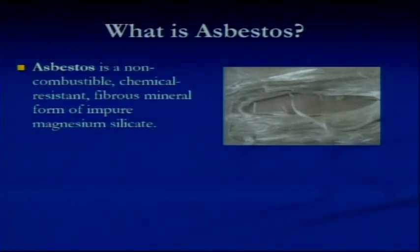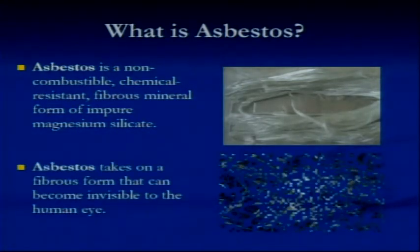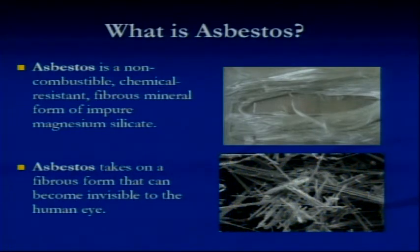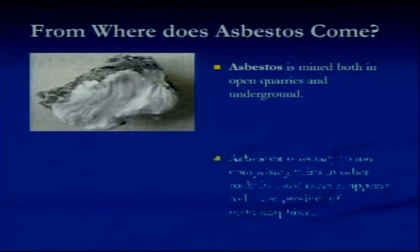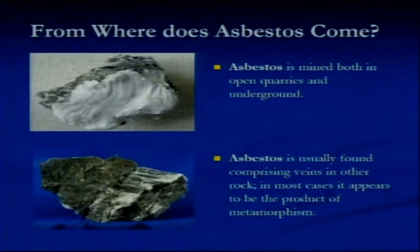Asbestos is a non-combustible, chemical-resistant, fibrous material form of impure magnesium silicate. The asbestos takes on a fibrous form that can become invisible to the human eye. Asbestos is typically just a material that's mined both in quarries and underground areas. It is usually found comprising veins and other rock, and in most cases it appears to be the product of metamorphism.